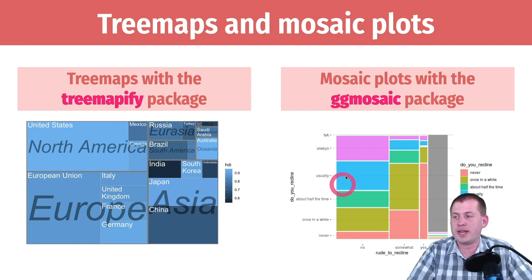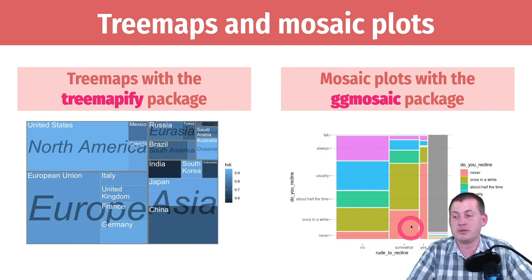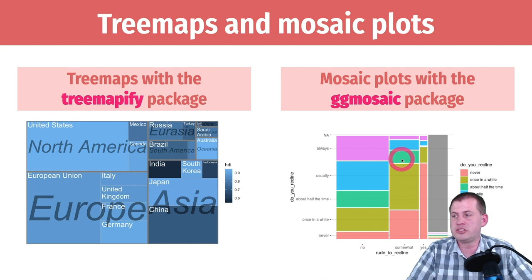On the y-axis, they're also sized by the amount of people who responded. You can see that people who think it's somewhat rude to recline will themselves once in a while recline.